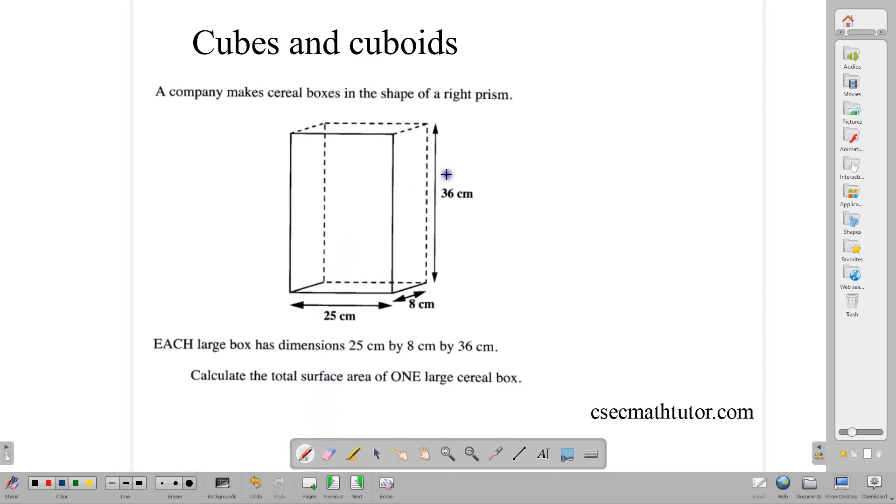In calculating our surface area, we are going to be multiplying, let's start with the base, 25 times 8. That is the length, if we call this the length, the width, the height. Then 25 times 8 gives us 200. And there are two of these sides, this one at the base and the one at the top, so let's multiply that by 2, and that gives us 400.